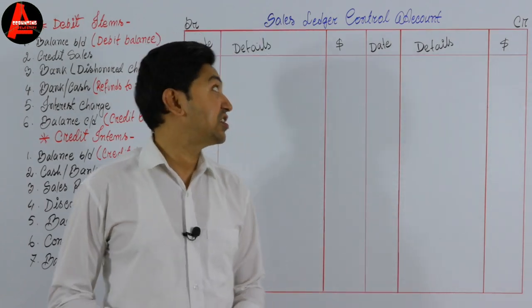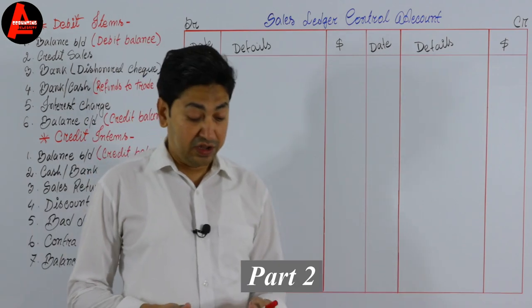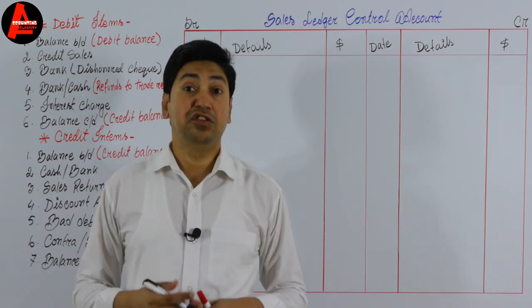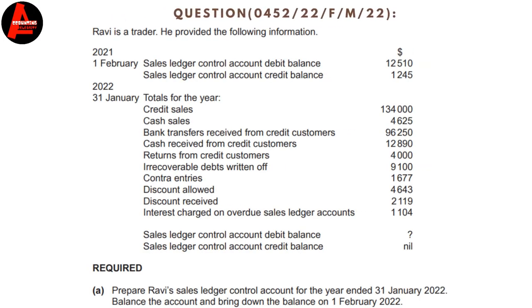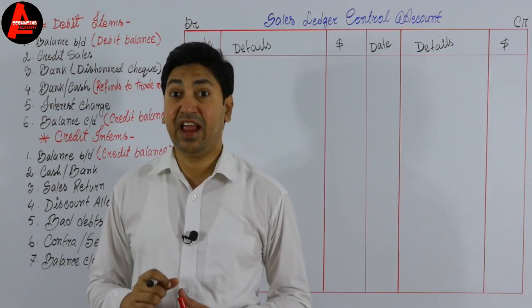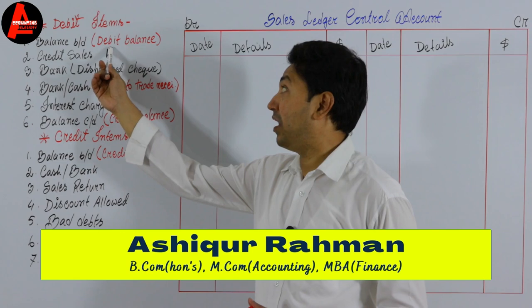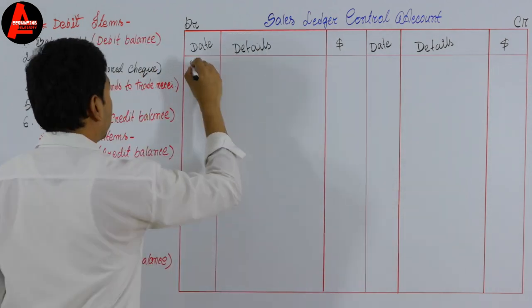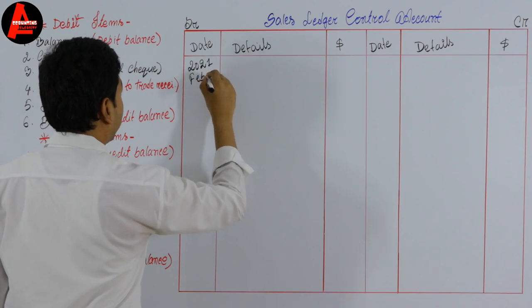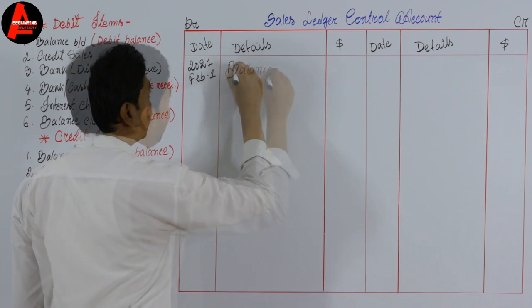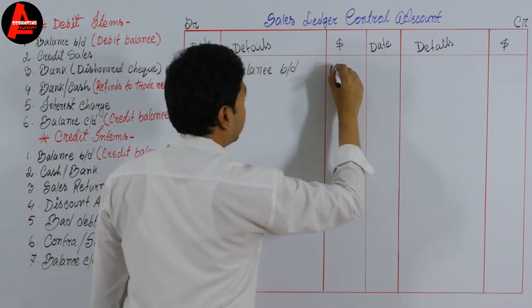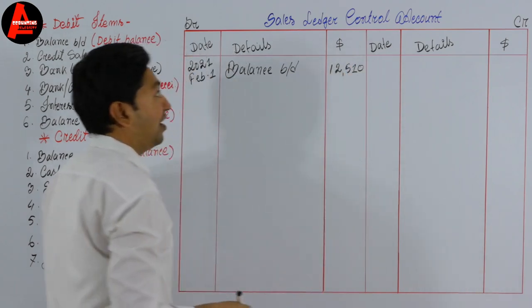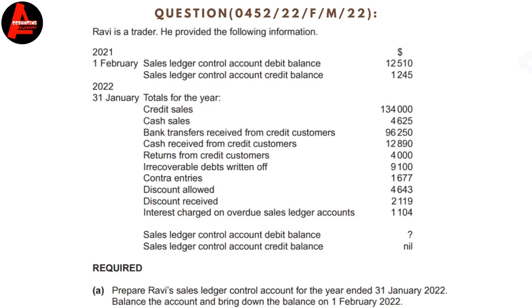Let us start recording all the transitions in this format. First of all, we need to write the opening balance. Look at the question: 2021, 1st February, sales ledger control account debit balance of $12,510. Since it is a debit balance, the opening balance will be recorded on the debit side. The date is 2021, February 1st, and we write balance b/d: $12,510.